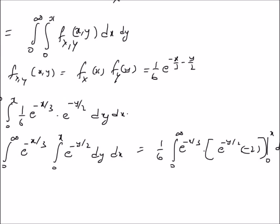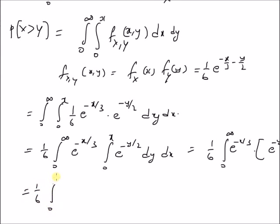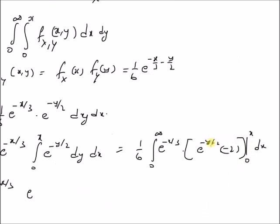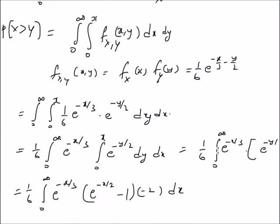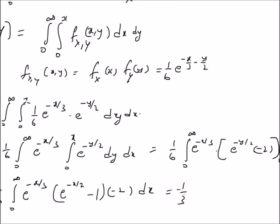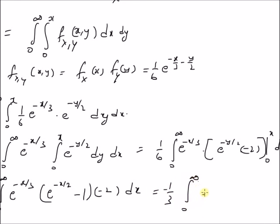Substituting the limits, we get (1/6) times the integral from 0 to infinity of e^(−x/3) times [e^(−x/2) · (−2) − (−2)], which simplifies to (1/6) times the integral from 0 to infinity of e^(−x/3) · [e^(−x/2) − 1] · (−2) dx. This leads to the expression: (−1/3) times the integral from 0 to infinity of [e^(−5x/6) − e^(−x/3)] dx.